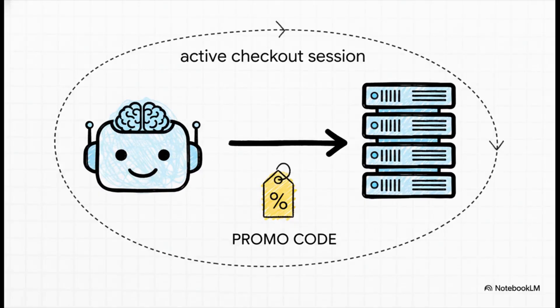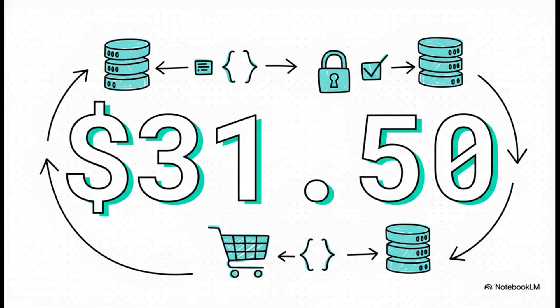But the conversation doesn't have to end there. Let's say the user remembers they have a promo code. The agent, using that discount capability it discovered a moment ago, can send another request to that very same checkout session, this time to apply the code '10off.' The server gets the code, checks that it's valid, and sends back an updated total — the price drops down to $31.50. This is a dynamic, real-time conversation happening between two completely different systems, all made possible because they're speaking the same shared language of UCP.